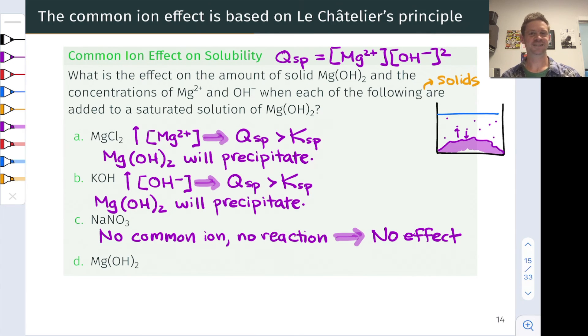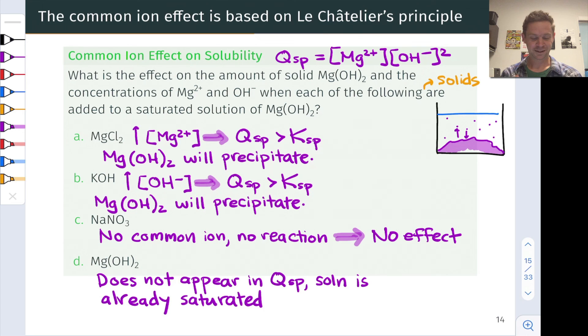What about magnesium hydroxide itself? Now this one's a bit of a thinker. We're already in a saturated situation, right? We've got a lump of Mg(OH)2 solid at the bottom of the beaker. We've got the maximum amounts of Mg2+ and OH- dissolved in the solution above. Adding more Mg(OH)2 solid actually has no effect on the value of Qsp. Mg(OH)2 does not appear in this reaction quotient, so adding more solid will have no effect on the value of Qsp. This means that after the addition of magnesium hydroxide, the system will still be in equilibrium. The solution is already saturated and it will remain as such, so the addition of more Mg(OH)2 solid has no effect on the position of equilibrium.